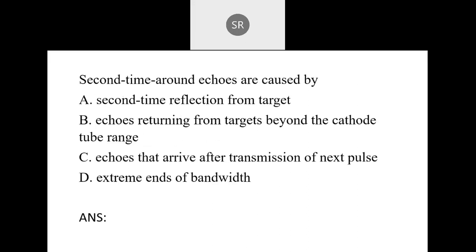Next: Second time around echoes are caused by: A — second time reflection from the target; B — echoes returning from the target beyond the cathode tube range; C — echoes that arrive after transmission of the next pulse; D — extreme ends of the band. Most people typed B, but the correct answer is C — echoes that arrive after the transmission of the next pulse.